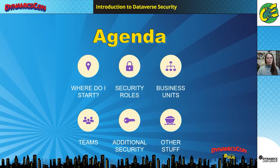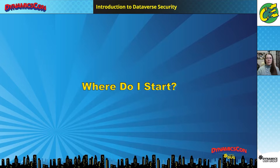Today we're talking about security and we're going to break that down into six areas. We're going to start with where do I start — what do I even do as a new admin learning about security? Then we're going to talk about security roles, business units, and teams. And then we're going to talk about additional security and all the other things that fit into this category. My goal is to give you an overview of everything available for security, and I hope you can take a few tidbits away to research further or make actionable changes in your environment right away.